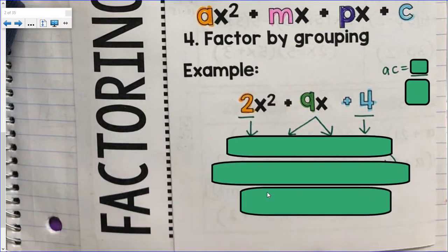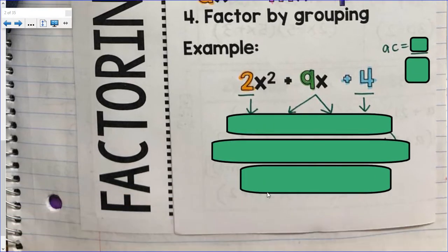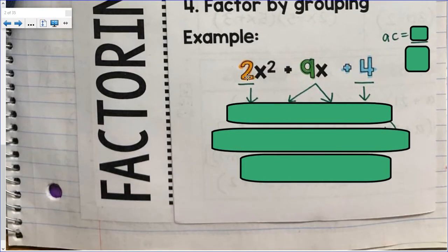So here's an excellent example of that four-step process. Step one, multiply a times c. So my a and c are 2 times 4, which becomes 8. Factor pairs of 8 are 1 and 8, 2 and 4.